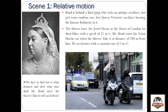We have to find out at what distance and after what time will Mr. Bond be able to catch the thieves' bike. The thieves leave the Tower of London with a constant speed of 21 meters per second, and Mr. Bond leaves with a speed of 0 meters per second — he just starts the Aston Martin and chases them when he is 100 meters behind their bike, with an acceleration of 2 meters per second squared. So this is all the data we have to find out after how much time and at what distance he will catch them.